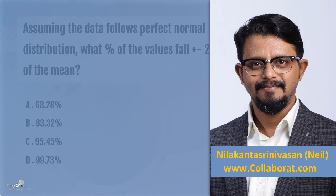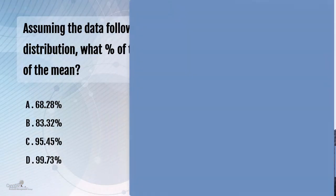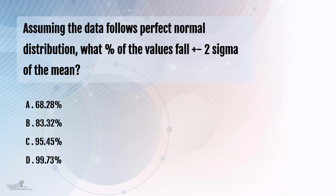Another very simple question, but it tests your memory more than your conceptual knowledge. Assuming the data follows perfect normal distribution, what percentage of values fall between plus or minus two sigma?